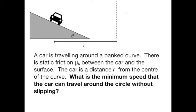I wanted to work through a very important example for physics 124. This is the case of a car traveling around a banked curve. So this is kind of a view of looking straight on at the car coming towards you. There's a coefficient of static friction mu s between the car and the surface, and the car is the distance of r from the center of the curve.